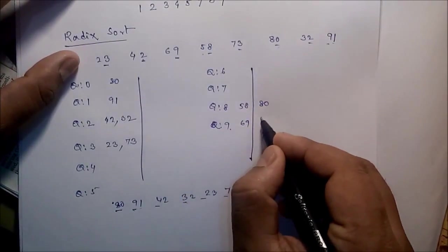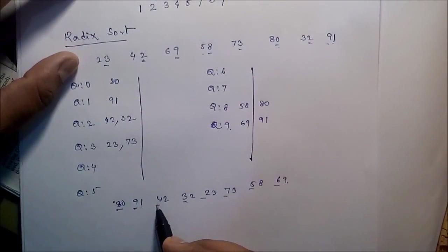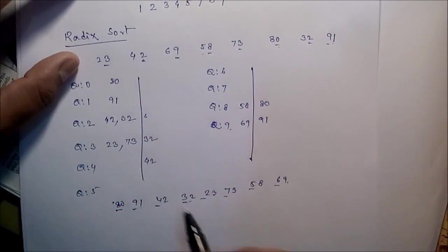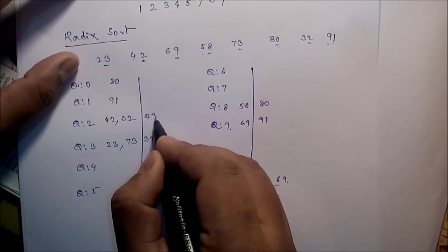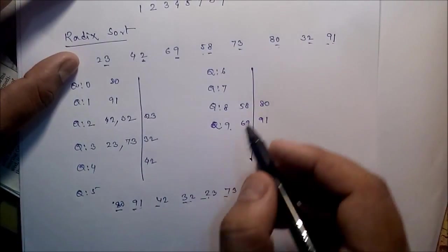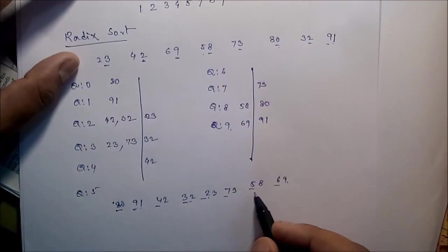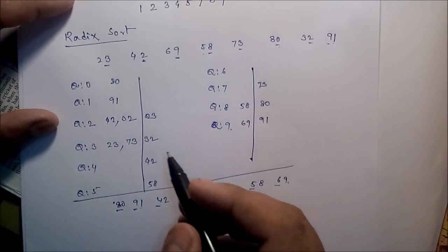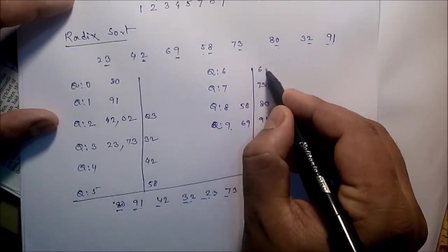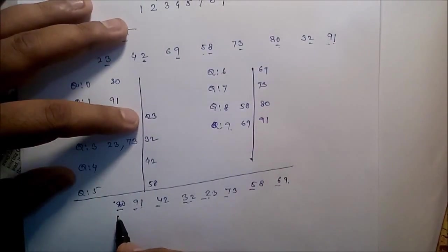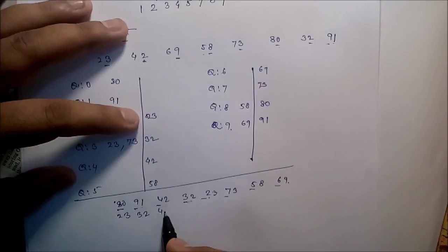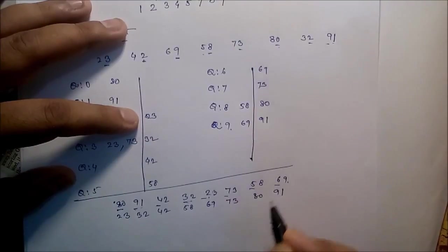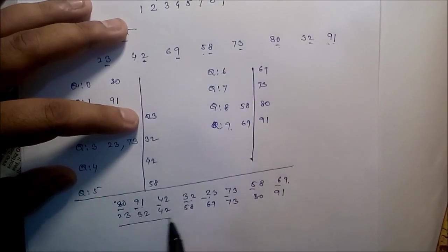Now select the most significant bit. Now 80, due to this 8, 80 should be here. Then 91, okay, 91 due to this 9. 42, 32, then 23, then 73, then 58, okay. Now copy the data one by one.